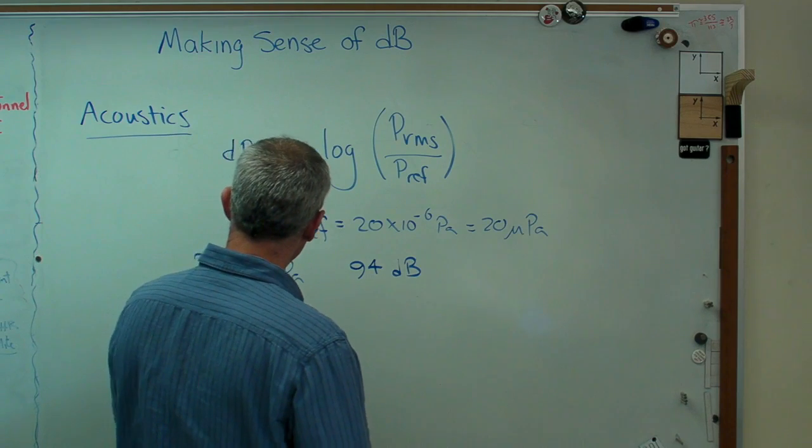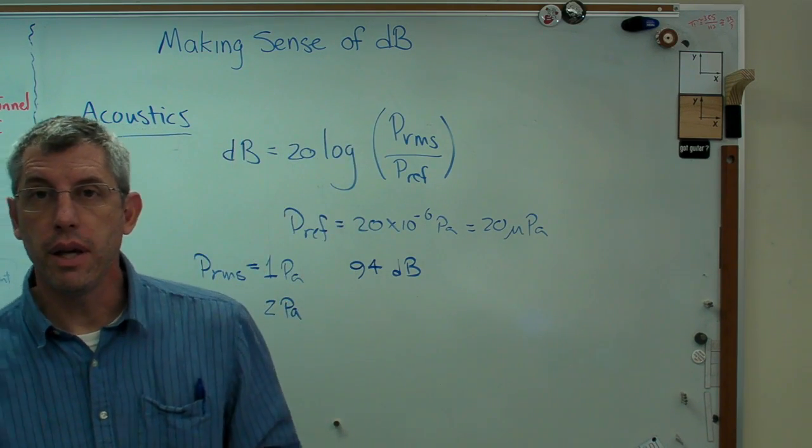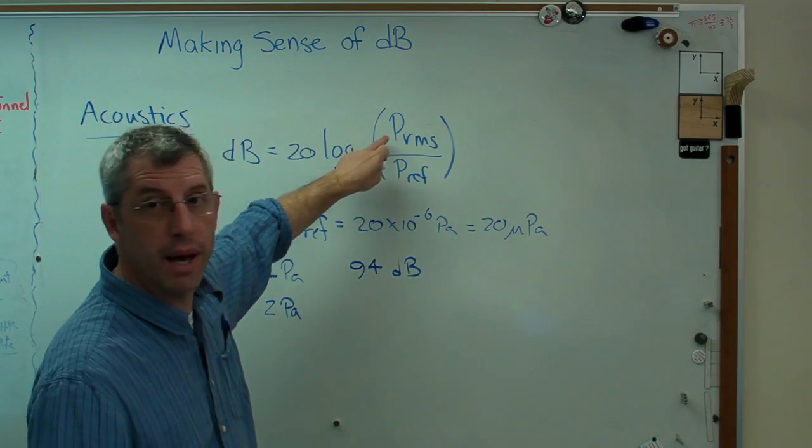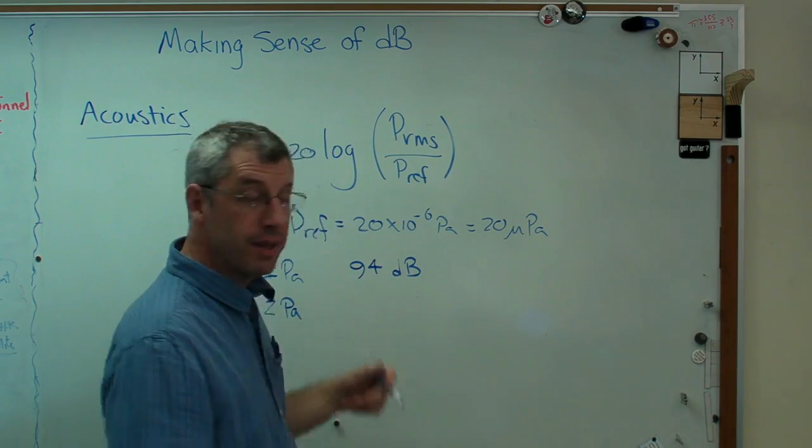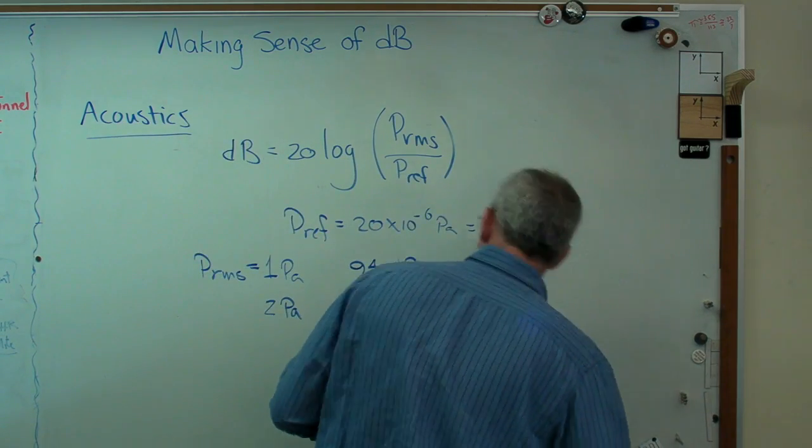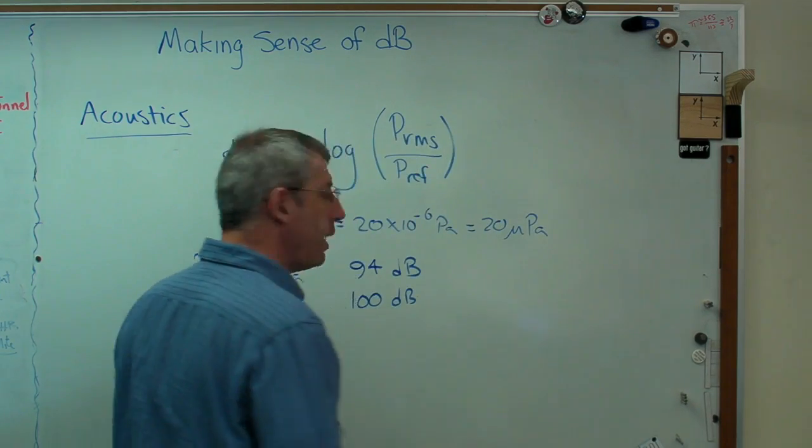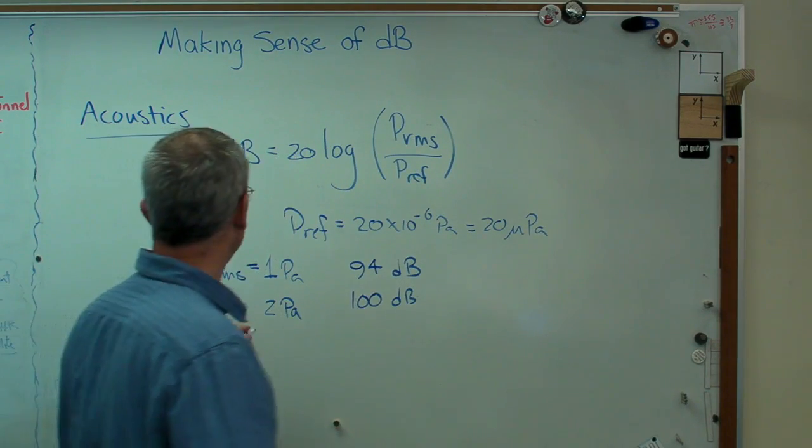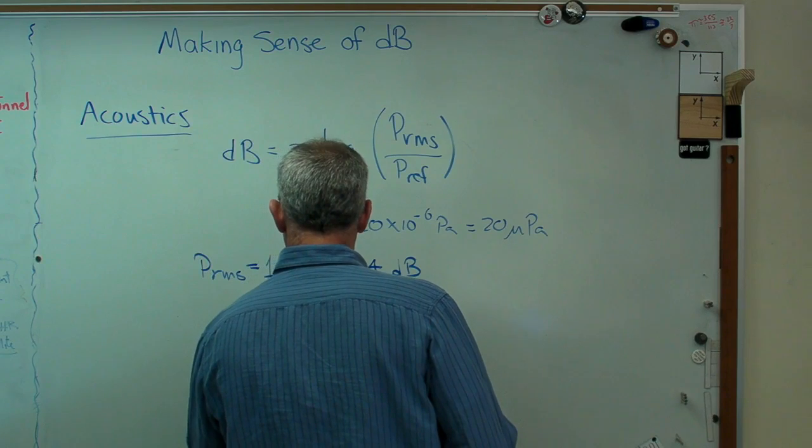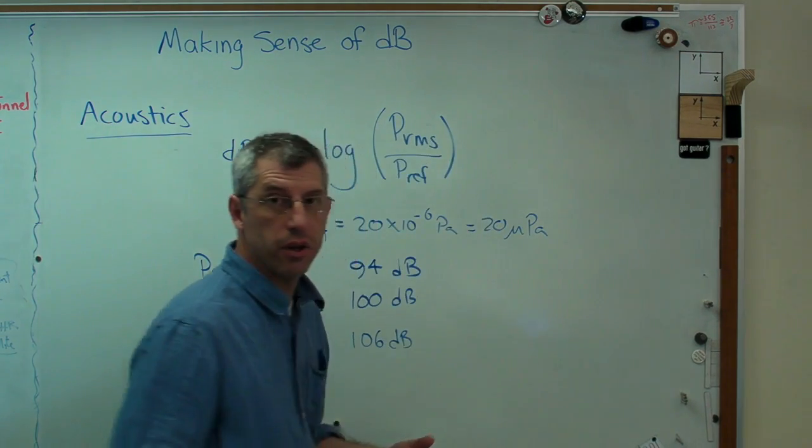What if that's two pascals? Well, if you double the PRMS, you're going to add 6 dB to this, so if you double this, turns out to be 100 even. Let's double it again. Let's go to 4 pascals. That's 106 dB, and so on.